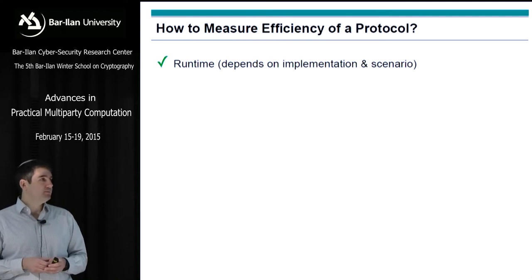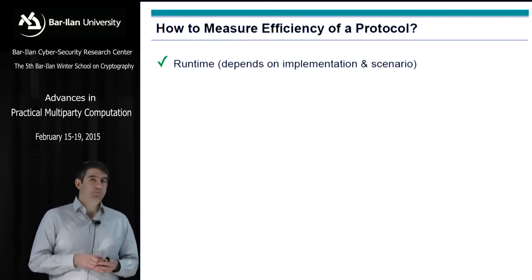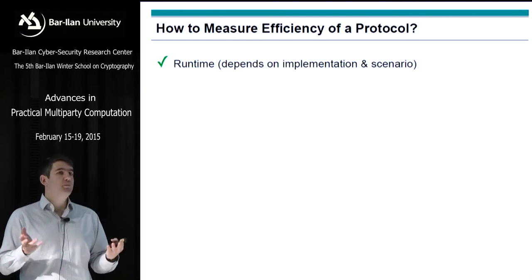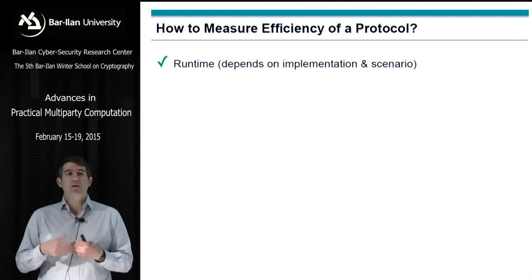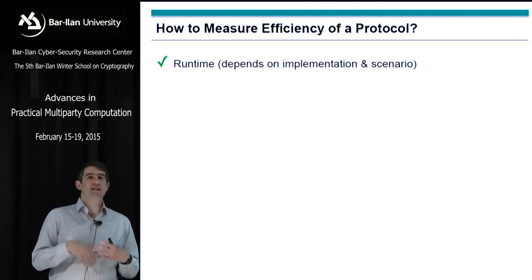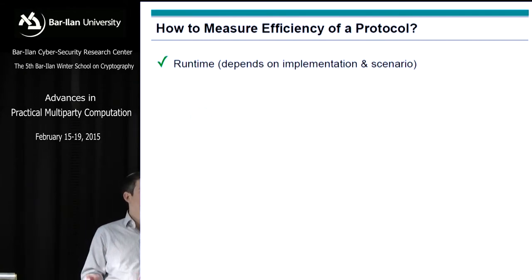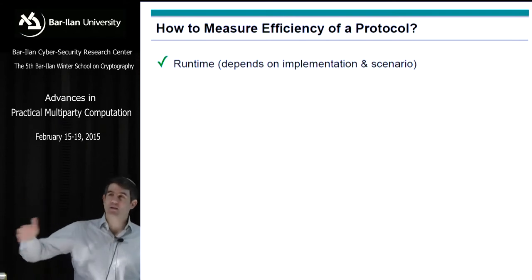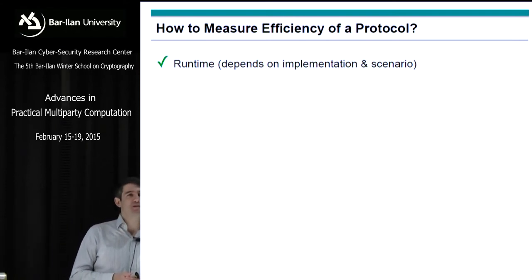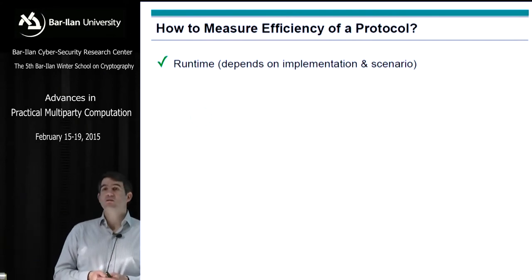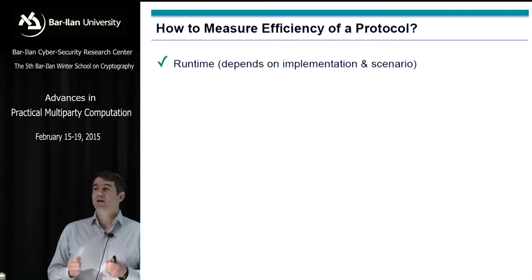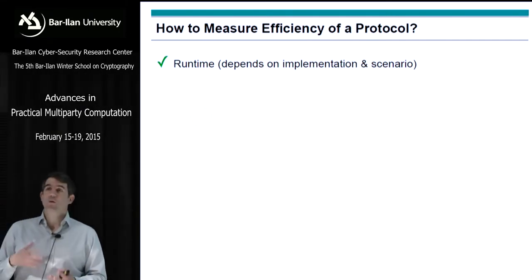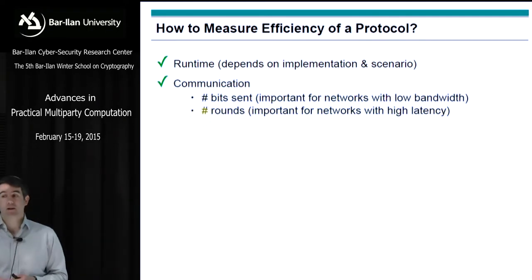How do we measure efficiency of a protocol? The obvious one is running time, but it's not so simple because it depends on the implementation and the scenario. It's one of the big problems in the field that we don't really have reasonable benchmarks or scientific practices for comparing when a protocol is better than another one. The scenario matters a great deal — it's very different if I'm running on two machines that are very far apart with high latency, or machines close together.